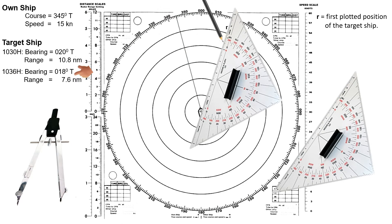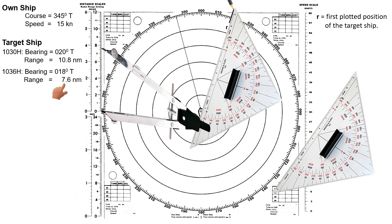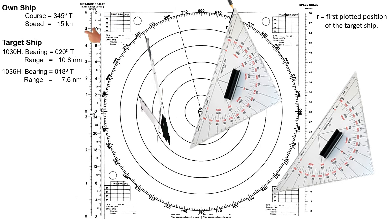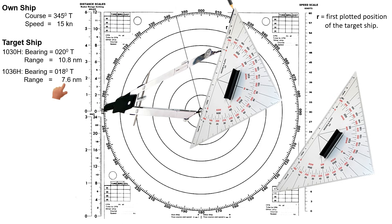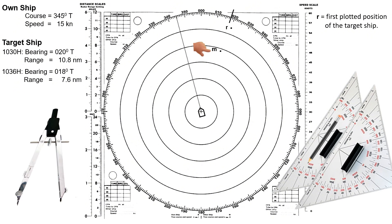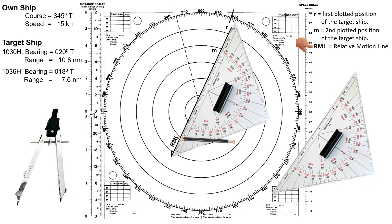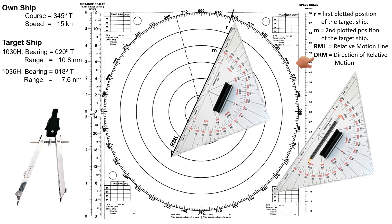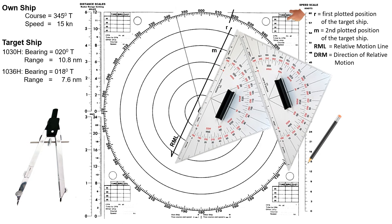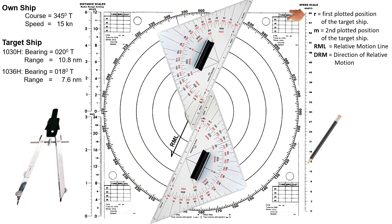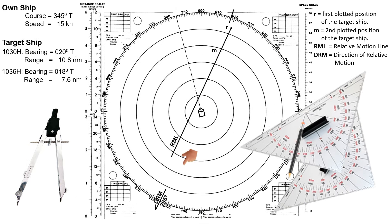Let's plot this on the radar plotting sheet. Place the triangle along 018 degrees, then measure 7.6 miles using the 12-mile range scale. Lay this measurement down from own ship's position along 018 degrees and mark the point. Label this point with a small letter M, to represent the second plotted position of the target ship. Draw a line from R to M and extend it. Label this line RML, which refers to relative motion line — this line corresponds to the target's relative vector as seen on the radar. To determine the direction of this line, known as DRM (direction of relative motion), drag the triangle towards the center of the plotting sheet. The DRM is 205 degrees.